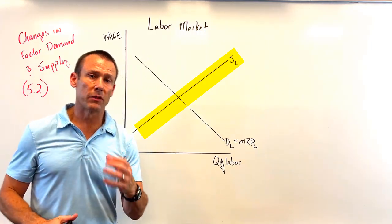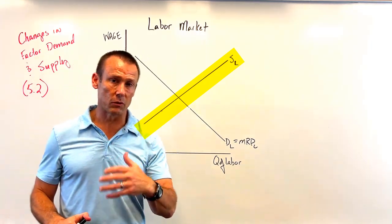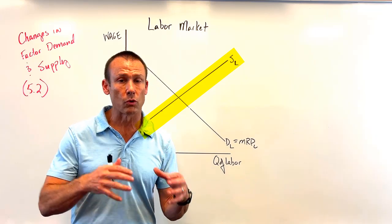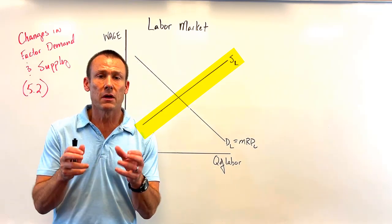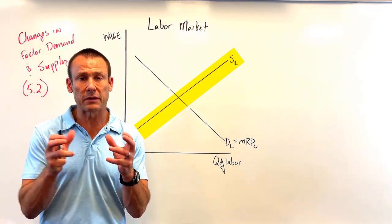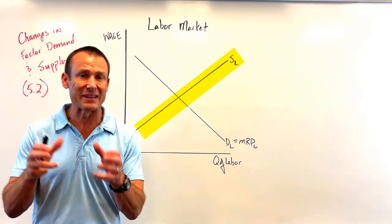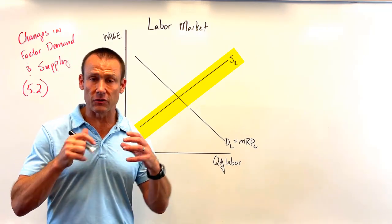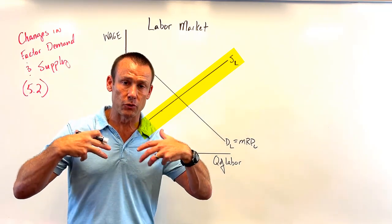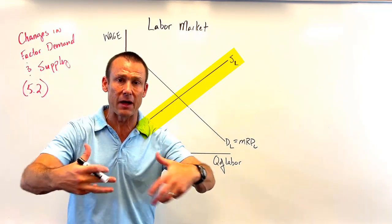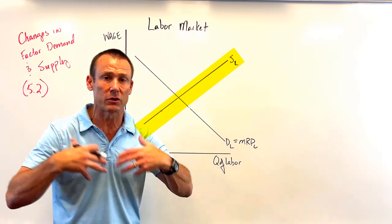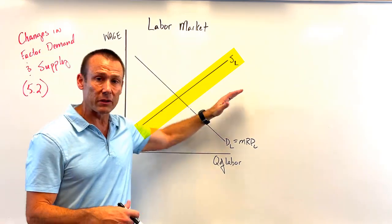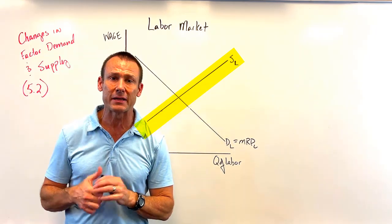Next is social norms. One of the biggest examples always brought up is World War II, in which women in the workplace became much more of an acceptable norm. You saw more and more women after World War II entering into that workforce. As you see more and more women entering into the labor market, supply of labor shifts to the right.